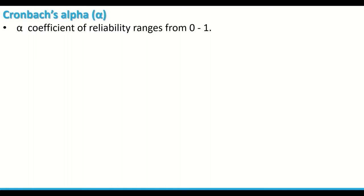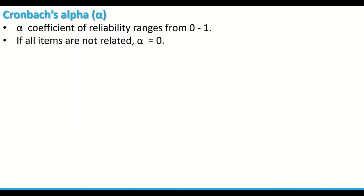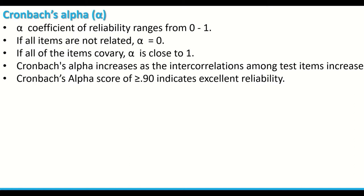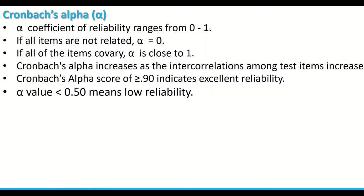The alpha coefficient has a reliability range from 0 to 1. If all items are not related, alpha equals 0. If all items co-vary, alpha is close to 1. Alpha increases as intercorrelations among test items increase. A Cronbach's alpha of 0.9 or greater indicates excellent reliability, while a value less than 0.5 means low reliability.